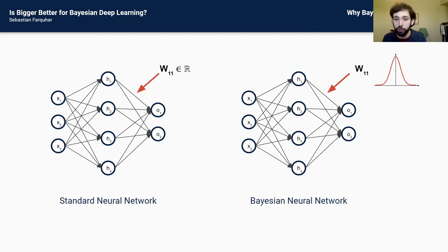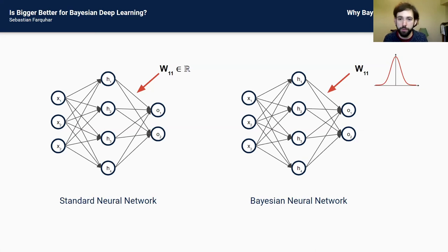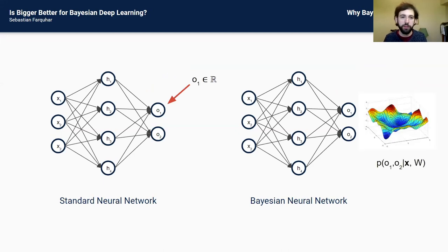What we might want to do instead — and it turns out to be a very powerful tool — is to place a parameterized distribution over each of the weights in your network and infer those weight distributions given your data using Bayes' rule. This is intractable for even pretty tiny networks, but there are a whole bunch of approximate methods we can use. I'm going to focus on variational inference, where you minimize a divergence between your true posterior and your approximating distribution. The output of a Bayesian neural network is a sample from a probability distribution over outputs conditioned on your inputs and weights.